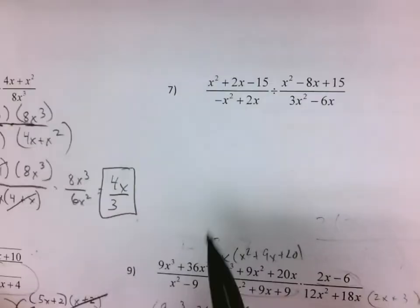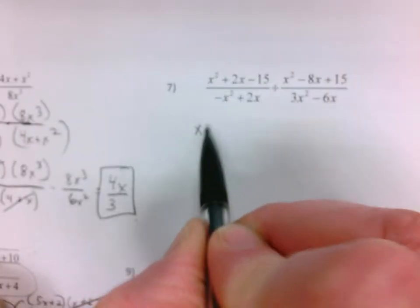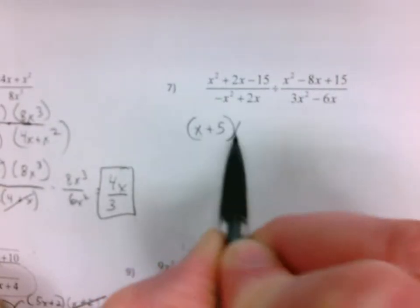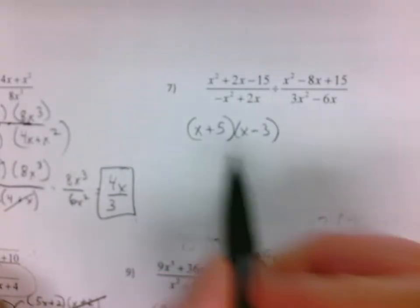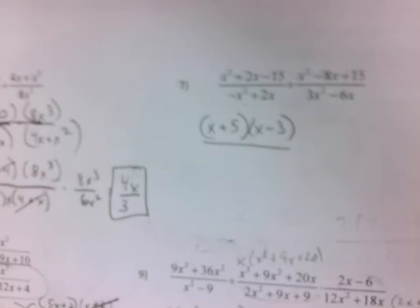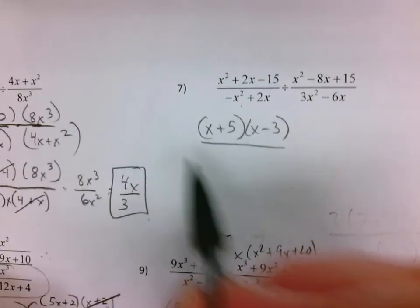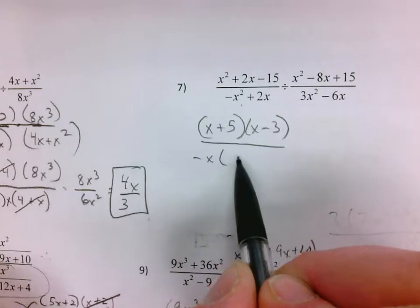I'm going to try to go the fast way, so I'm going to factor as I rewrite. So x plus 5, x minus 3. I'm going to take, this is not the order I usually want to see, so I'm going to take it out as a negative x. So my greatest factor is going to be a negative x, leaves me with x minus 2.